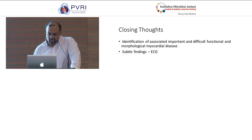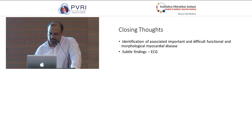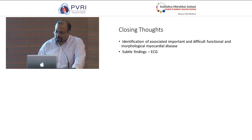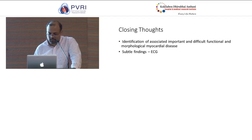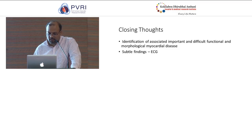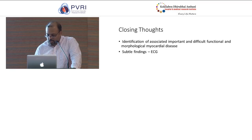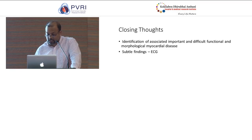Some closing thoughts: it is important to identify, especially in adult patients, associated important and difficult-to-find functional and morphological alterations of the myocardium before structural interventions like ASD device closure, because they could lead to problems afterward. Subtle findings on the ECG — like negative T waves extending up to V5 to V6 — should be looked into more carefully. This patient with apical HCM didn't have the giant negative T waves usually seen, but they were still negative up to V6. Thank you very much.